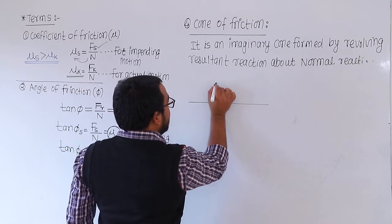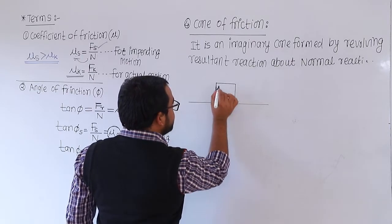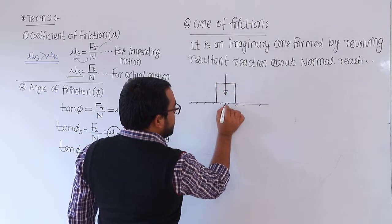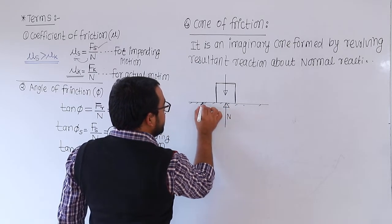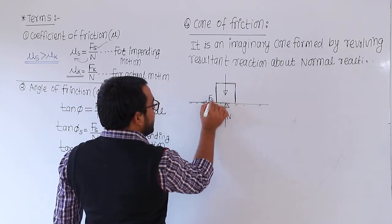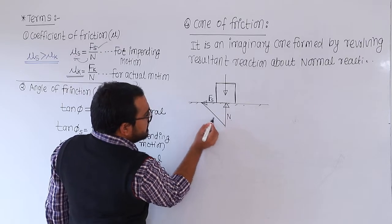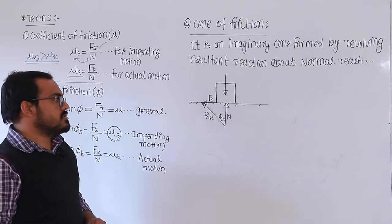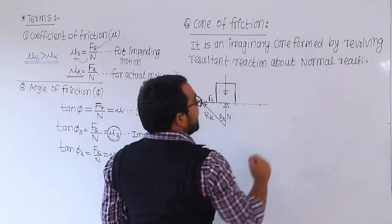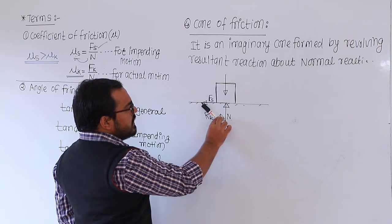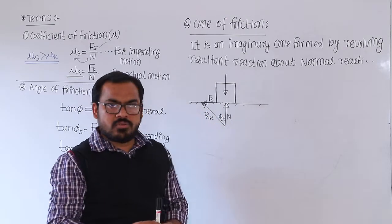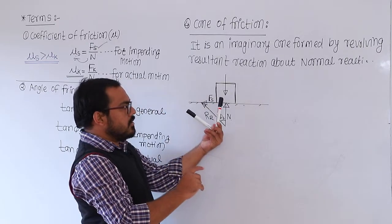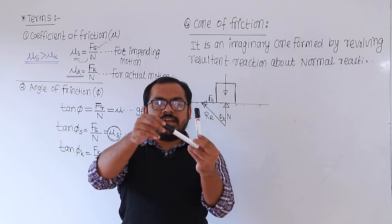Let us consider this problem. If there is a block on a rough surface, this block has a weight acting downward. There is a normal reaction N and a frictional force F_s. The resultant of the normal reaction and frictional force is the resultant reaction R_r. The angle between the resultant reaction and the normal reaction is the angle of friction phi.